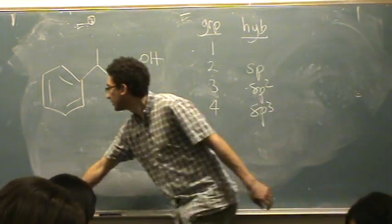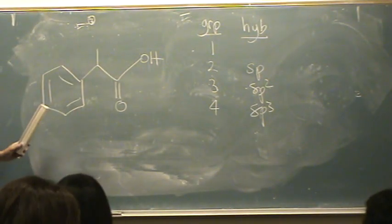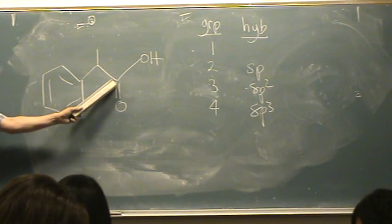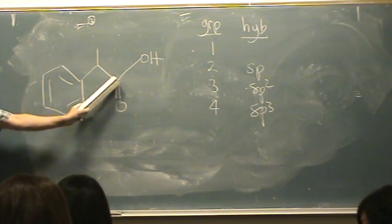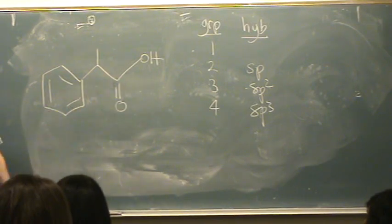So you go, let's do this one. What do you think it is? What happens? Sp2 because there's three groups, double bond and two single bonds.